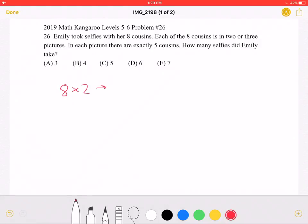If we took a picture of each cousin individually and they appeared in three photos, we would have 24 pictures. However, in this problem, we are not taking photos of the cousins individually, but in groups of five.